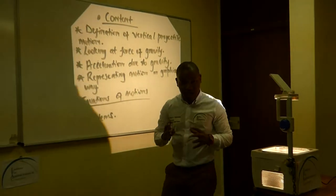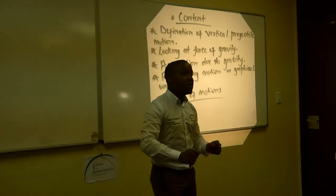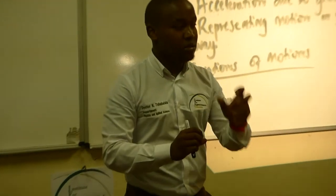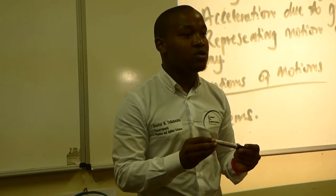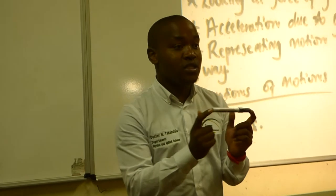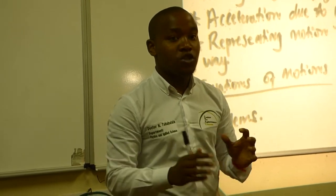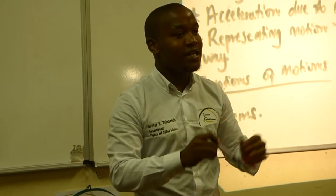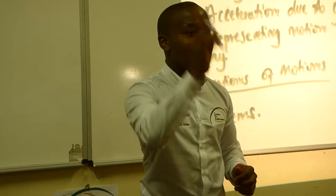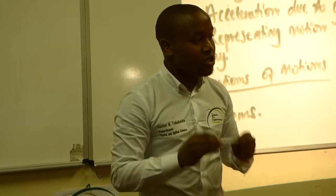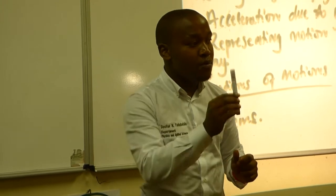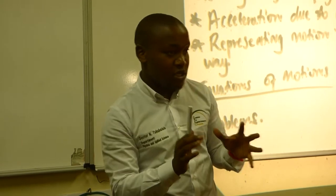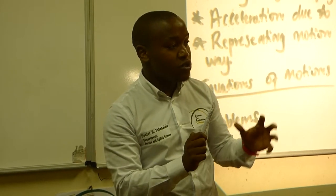What is a vertical projectile? A projectile is an object that can be thrown up with an initial velocity, so that the only force acting on this object is the force of gravity only. We ignore any other forces, particularly air resistance. When I throw something up, there's what we call air resistance. So a projectile is any object that can be thrown up with an initial velocity, and the only force that can act on this projectile is the force of gravity.